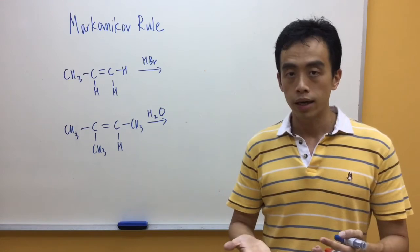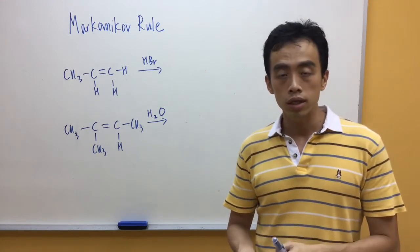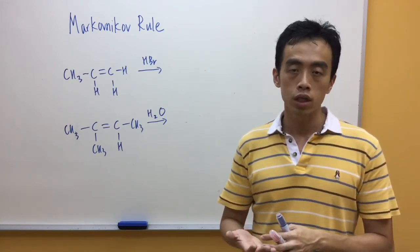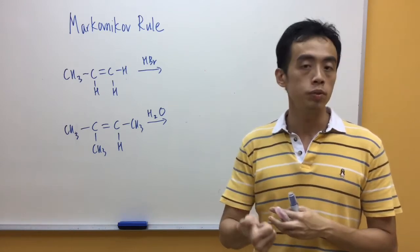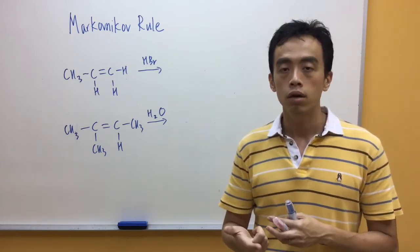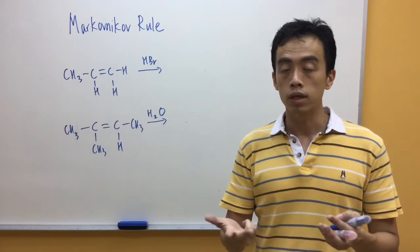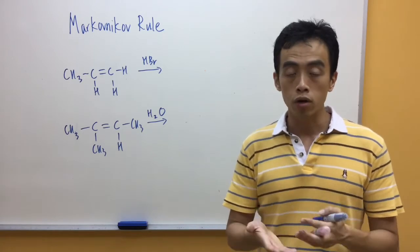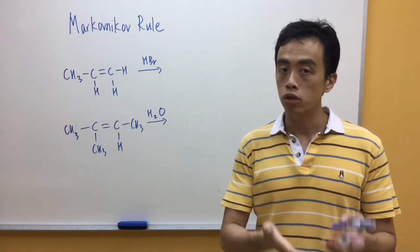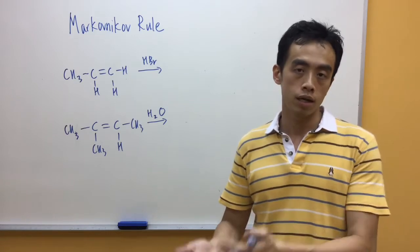The Markovnikov rule is really simple to apply when you have an asymmetrical alkene undergoing electrophilic addition reaction involving reactants like HBr, HCl, or HOH, or basically water. We may use the Markovnikov rule to decide which product is the major product and which product is the minor product.